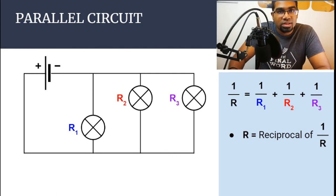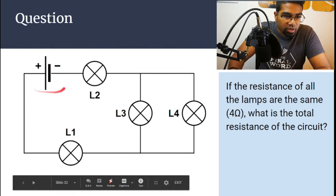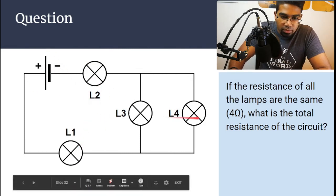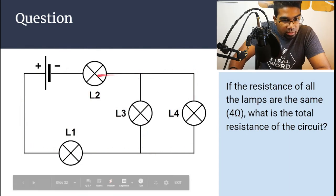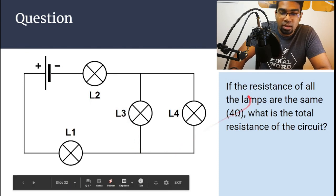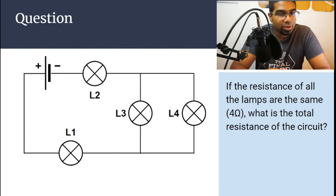It gets more complicated with a combination of series and parallel circuits. Looking at the circuit: we have one dry cell, and four lamps where L3 and L4 are connected in parallel, while L1 and L2 are connected to the dry cell in series with that parallel combination. If the resistance of all the lamps is the same at 4 ohms, what is the total resistance of the circuit? Try the question and comment your answer below. That's it for this video — if you've learned something please hit the like button and subscribe. See you in the next video!